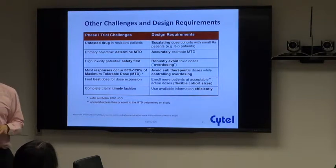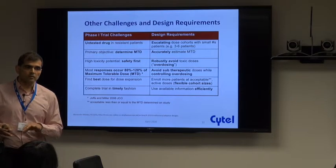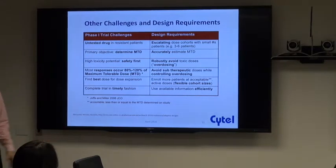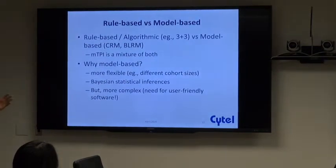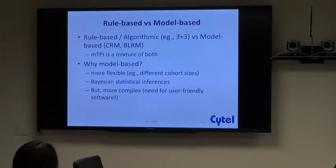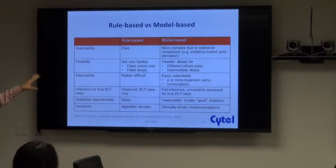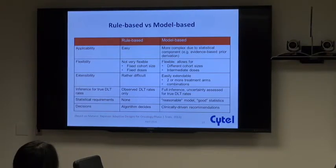This comes at odds with the three-plus-three design, which only takes into account information from the last two cohorts and essentially ignores anything that happened before. In that context, we have a list of model-based, algorithmic, and hybrid approaches. I'm not going to explain the merits of one over the other, but in the presentation you'll be given you can see their differences in terms of extensibility, flexibility, and so forth.